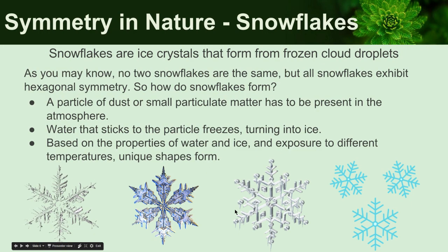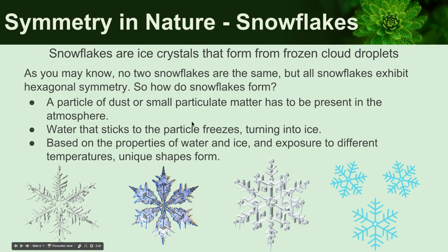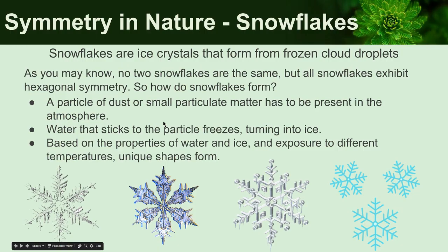We also see symmetry in snowflakes, which are really interesting because, as you guys may know, no two snowflakes are ever alike. There have been trillions of snowflakes over time, and it's believed that none of them show the same exact pattern because they're so intricate. So how do they form? You first start out with a particle of dust or small particulate matter in the atmosphere — that's where water clings onto, since it's hard for water to form by itself. It grabs around the dust particle, keeps building up, and as it freezes, the different temperatures and conditions it's exposed to cause unique shapes as it falls toward Earth.